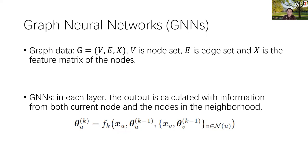To deal with such graph data, graph neural networks are proposed — a class of model in which the output is calculated using not only information from the current node, but also information from nodes in the neighborhood. This helps the model learn information from a wider perspective, and therefore modeling performance can be improved. Graph neural networks are commonly used and can deal with various data.